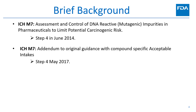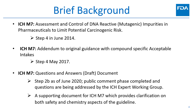An addendum document with compound-specific acceptable intakes reached Step 4 in May of 2017. Since implementation of the ICH M7 guidance, there has been some confusion with regards to how some of the approaches outlined in the guidance have been interpreted. To help address any confusion, ICH developed a question and answer document. This document, at the time of this recording, is in Step 2B of the revision process, with the public comment phase completed and questions being addressed by the ICH Expert Working Group.